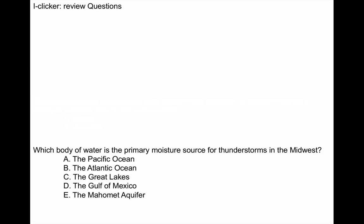Last question: which body of water is the primary source of moisture for thunderstorms in the Midwest? Is it the Pacific Ocean, Atlantic Ocean, Great Lakes, Gulf of Mexico, or the Mahomet Aquifer? Champaign, at the University of Illinois in Champaign-Urbana, sits on top of the Mahomet Aquifer. Turns out the answer is the Gulf of Mexico.